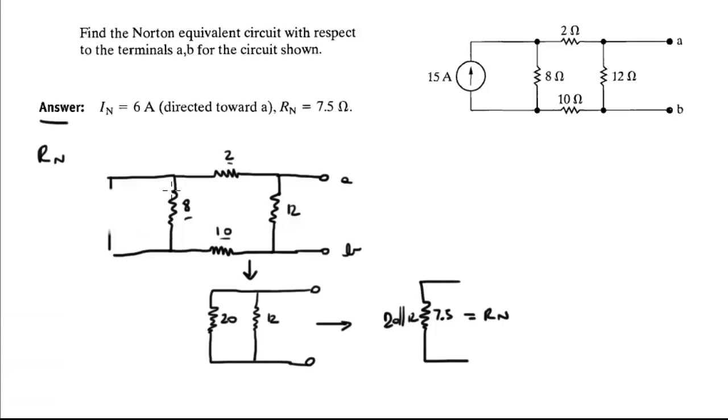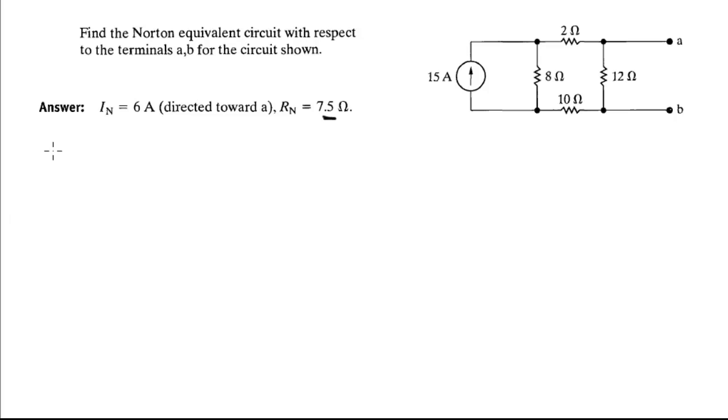So now that we found the resistance, we're gonna use simply voltage divider to find the Thevenin voltage. Why are we gonna find the Thevenin voltage? Because remember that with the Thevenin voltage and the Norton resistance, which is the same as the Thevenin resistance, you can just do a simple source conversion to find the Norton equivalent.